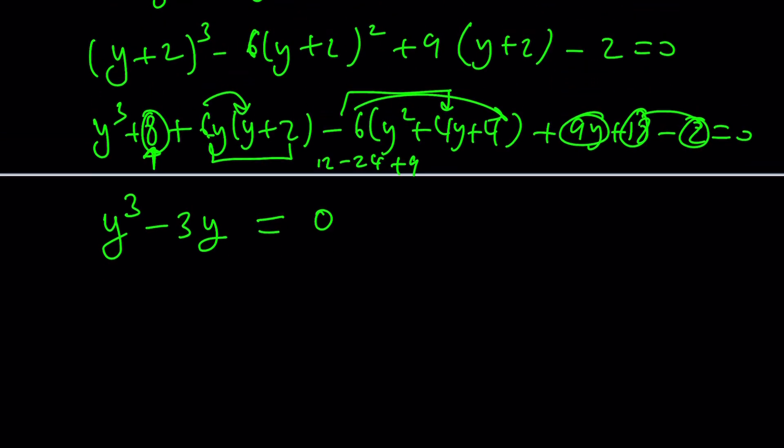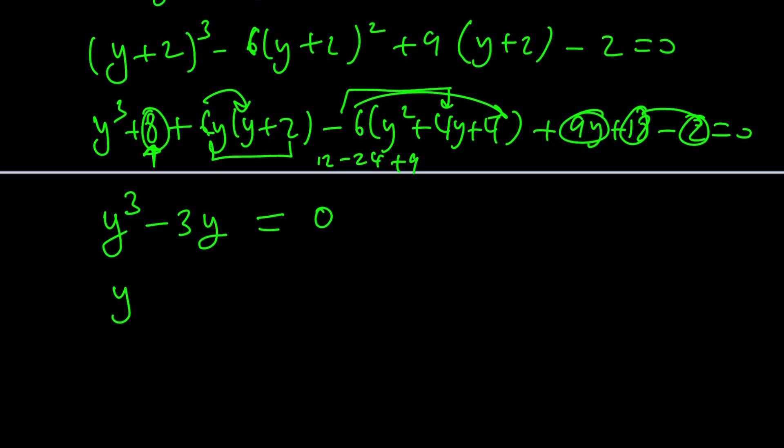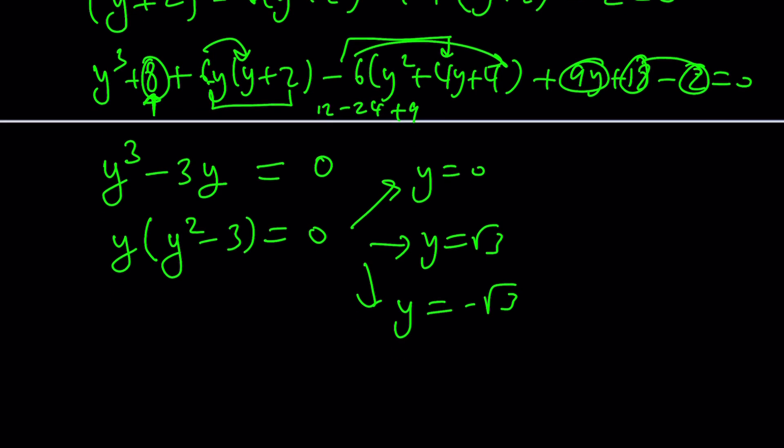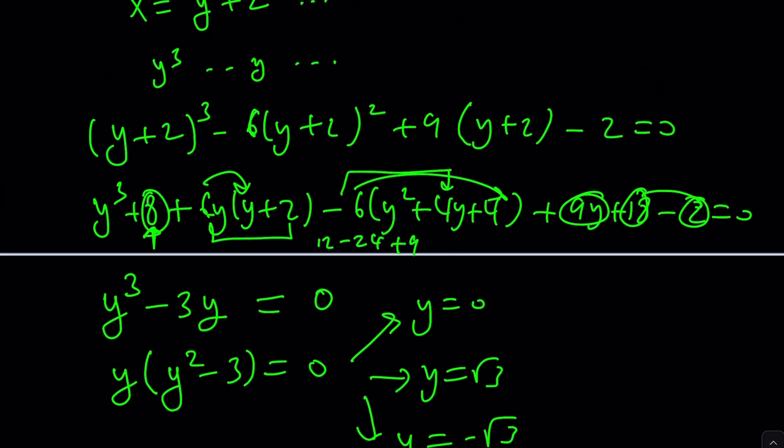This is a really, really depressed cubic, which is good, because now we can go ahead and take out y, and write this as y squared minus 3 equals 0. From here, you get y equals 0, y equals root 3, and y equals negative root 3. Probably one of the best cases that you can ever get. Where do we go? What is y? X is y plus 2.